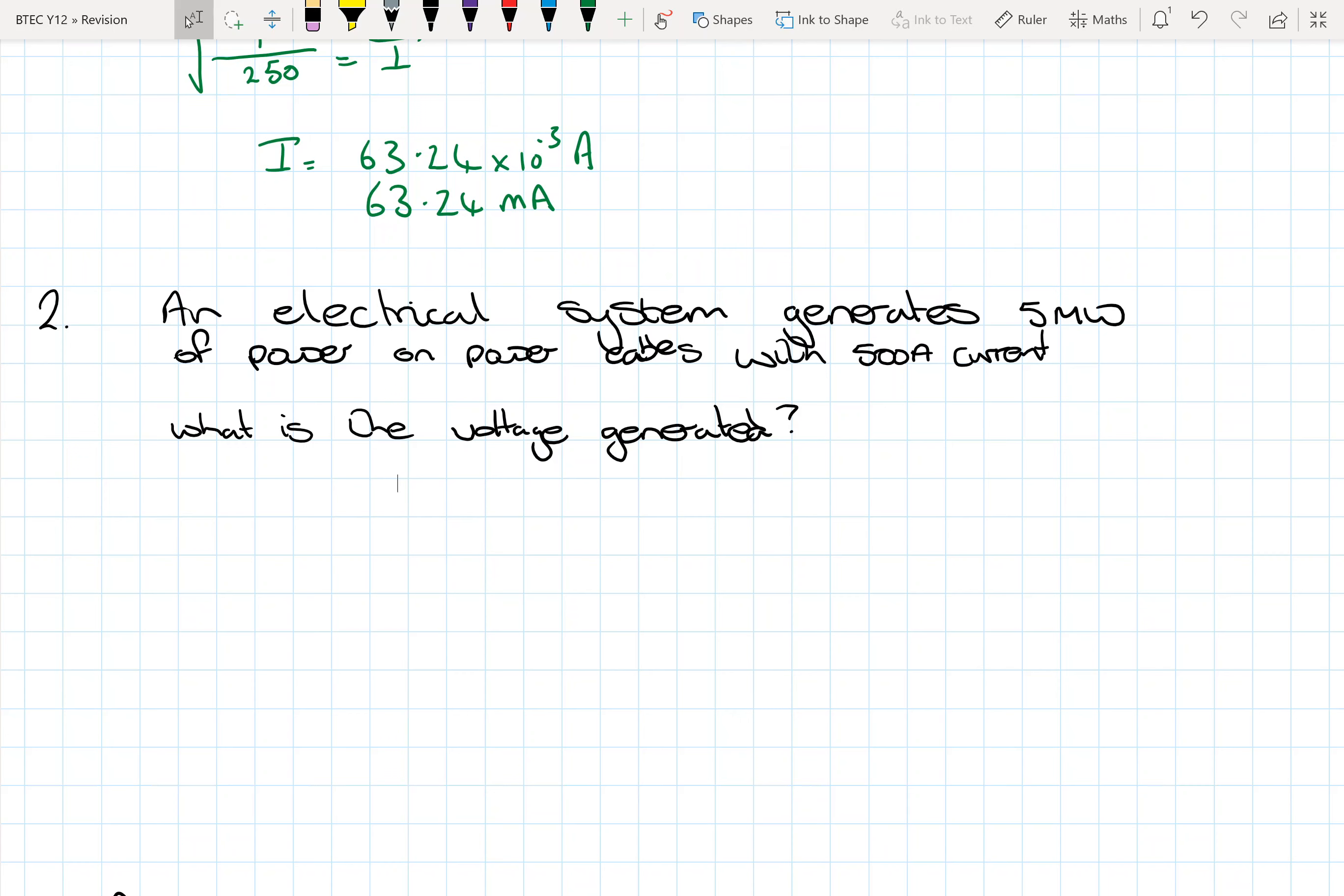Okay, let's look at the second question. So we've got an electrical system generating 5 megawatts of power to power cables that are carrying 500 amps of current. So what we want to do is, I just need to start with what is the voltage being generated?